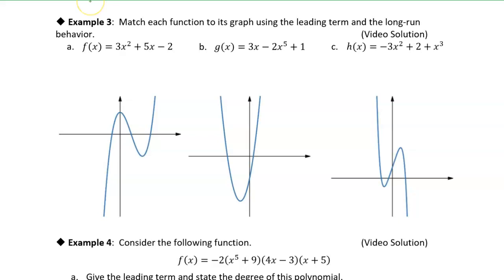The first thing we need to do is identify the leading term — the term with the highest power of x. So for f(x), the leading term is 3x squared. That's the term with the highest power of x, so that's our leading term.